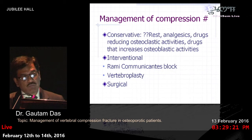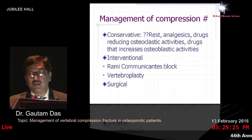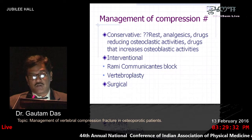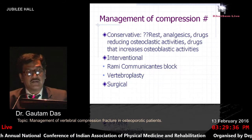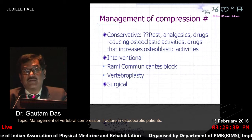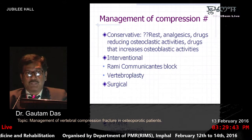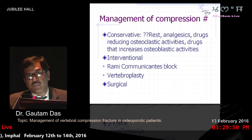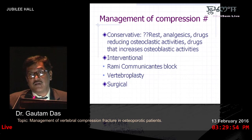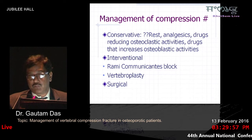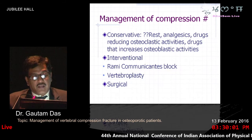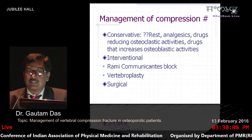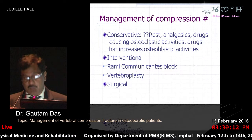For management, conservative options include rest and analgesics, particularly opioid analgesics. Drugs that reduce osteoclastic activity include estrogen and bisphosphonates; drugs that increase osteoblastic activity include anabolic steroids and teriparatide, which is an important drug for increasing osteoblastic activity. Surgical stabilization is sometimes required when the compression fracture involves nerve roots. Interventional pain management is very important to mobilize the patient early.